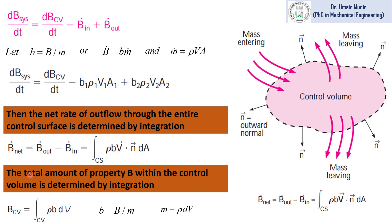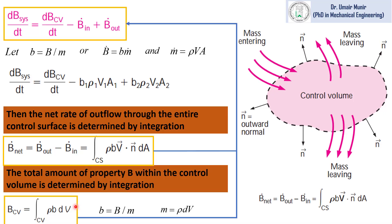In the next step we define B for the control volume. B is the extensive property, and we have defined B equal to small b times m, where m is mass, which is equal to rho times delta V. So the term B_cv can be written in the form of a volume integral. If we differentiate with respect to time and back-substitute, we proceed toward the final form.